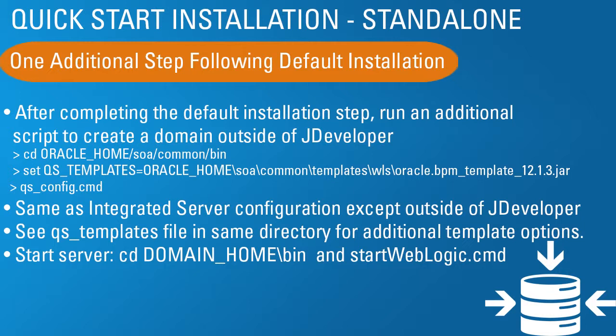There's a file called qs-templates in the same SOA common bin directory that lists all the additional templates you could specify. When you're done with that, you start the server — it's all automatic, nothing else to do. Just specify the location, then go into your domain home bin directory and run the start WebLogic command file. Everything starts up from there.